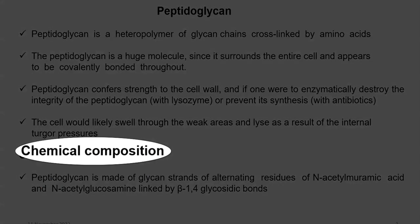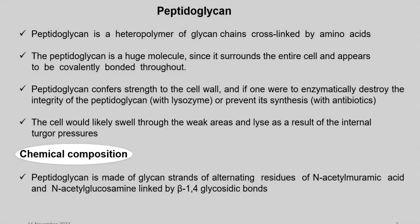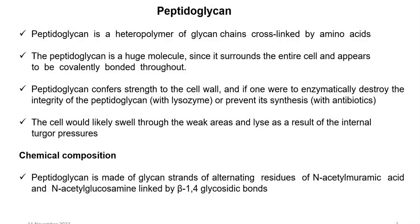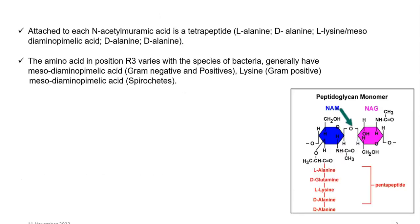Next, we look at the chemical composition of peptidoglycan. Peptidoglycan is made up of glycan strands of alternating residues — that is, N-acetyl muramic acid as well as N-acetyl glucosamine — linked by beta-1,4 glycosidic linkages.